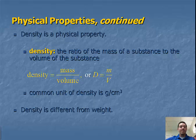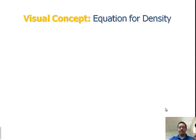And density is different from weight because it's taking into consideration mass and volume, and not necessarily the gravity that's pushing down on a particular mass. Alright, so on the previous slide, we said the equation for density is d equals m divided by v, or mass divided by volume.